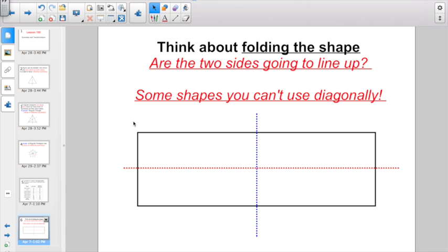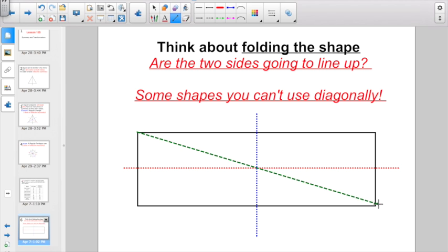But sometimes you have shapes that aren't all equal sides. And you really have to think about folding the shape. Are the two sides going to line up? You've got to visualize and make that picture in your mind. We have a line of vertical symmetry right here because I could fold it over and this side would line up with this side. I have a line of horizontal symmetry along here because if I folded it that way, this side would line up with the other side. But let's take a look, see if this rectangle would have diagonal symmetry.